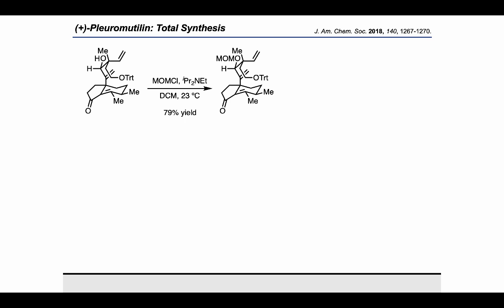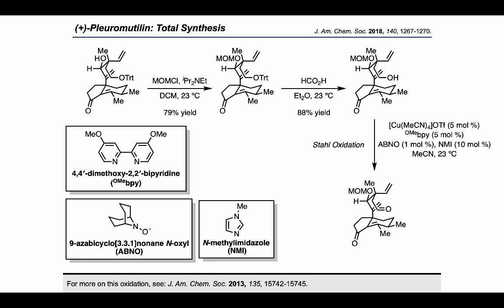Carrying on with the desired diastereomeric product, they protected the secondary alcohol using MOM chloride and Hünig's base, then removed the TMS protecting group using formic acid. They were then able to convert the primary alcohol to an aldehyde using the Stahl oxidation, which furnished the substrate they would need to carry out the ketyl radical cyclization proposed earlier.